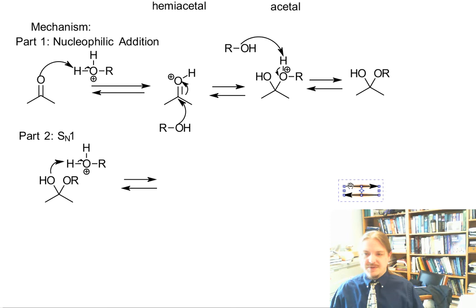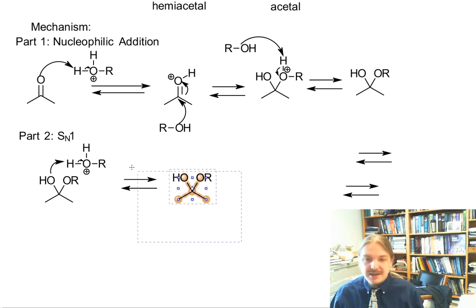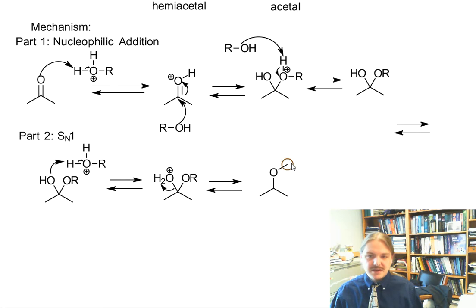Make some extra copies of my equilibrium arrows, I'm going to need them. Copy my hemiacetal over and now it's protonated so that's a good leaving group. Since I've told you it's an SN1 mechanism then you can guess the next step is loss of leaving group. The next intermediate is a carbocation.